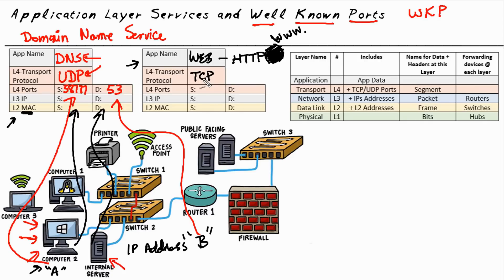The well-known port that a web server would be listening on would be TCP port 80. When Bob formulates this request to go to the web server, he's going to use the destination port of 80, which is what the web server is listening on. Similar to what we did with DNS, Bob's computer is going to spin the magic wheel, find a port not currently in use, and use that as the TCP source port — let's say port 1553. Bob would include the web server's IP address as the destination, his own source address, and if they're both on the same local network, his local Layer 2 Ethernet address and the server's destination Layer 2 address. All of that information as a request would be sent out to the web server Bob wanted to communicate with.